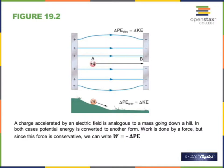When I did 10 joules of work, the potential energy of this object increased by 10 joules, because energy can neither be created nor destroyed. I lost 10 joules, and this object gained 10 joules. Work is the negative of the change in potential energy — the delta symbol stands for change.